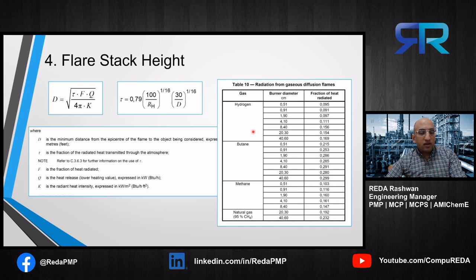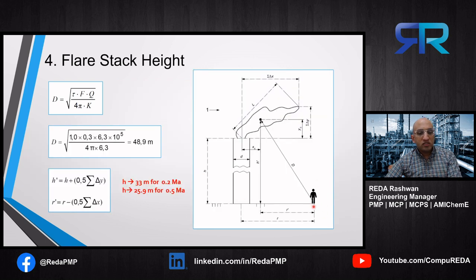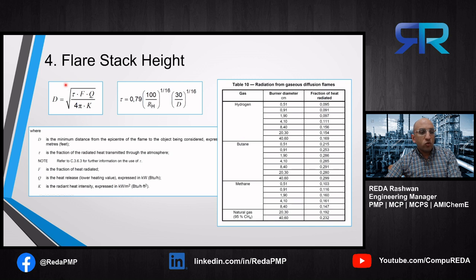The last step is to calculate the flare stack height. First, we need to calculate D — the minimum distance from the epicenter of the flame to the object being considered, which can be a person or equipment: the closest thing to our flare. It is calculated using this equation.